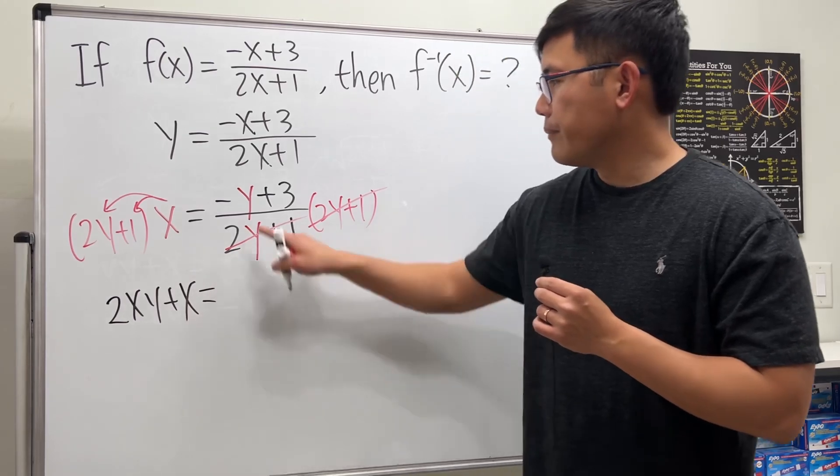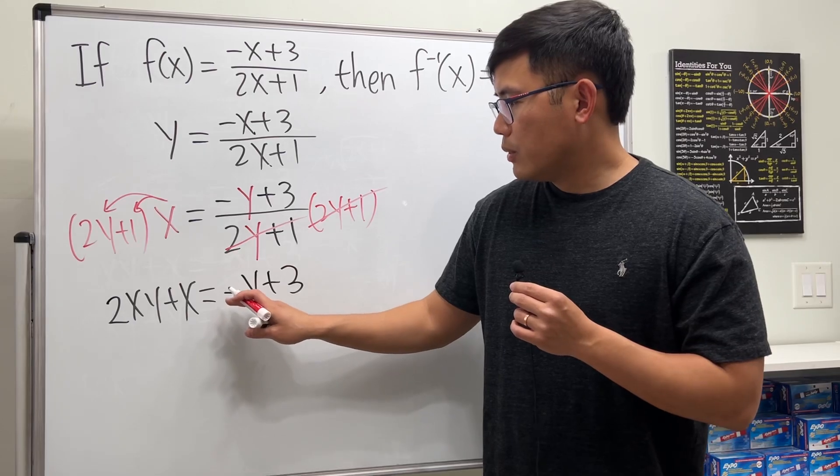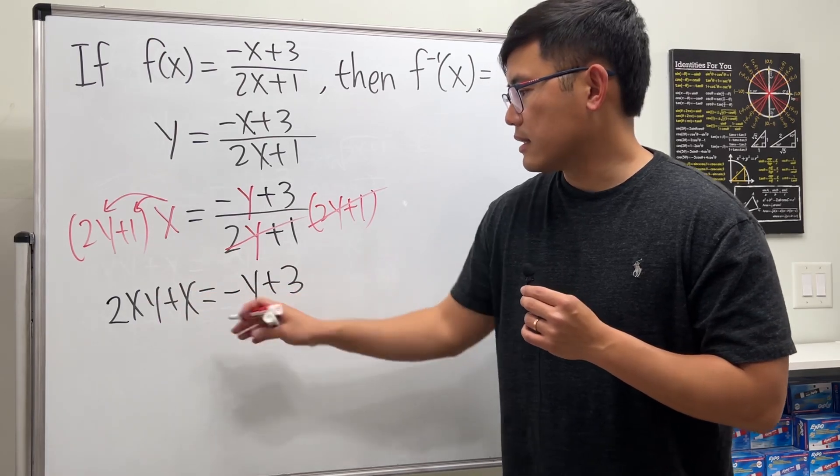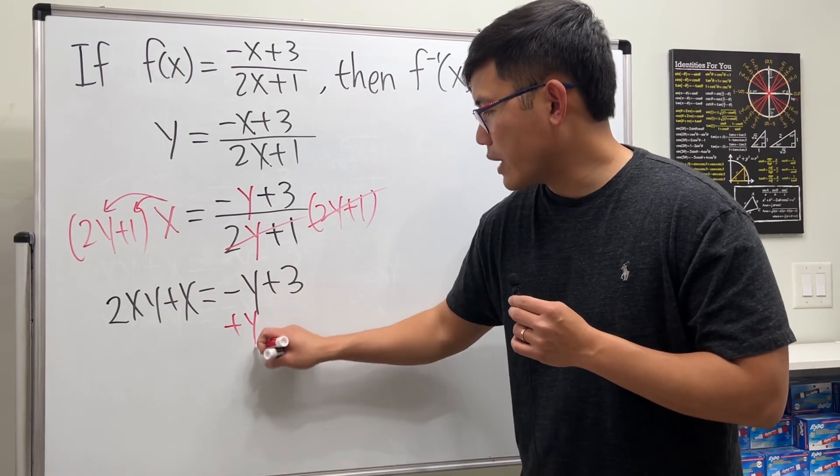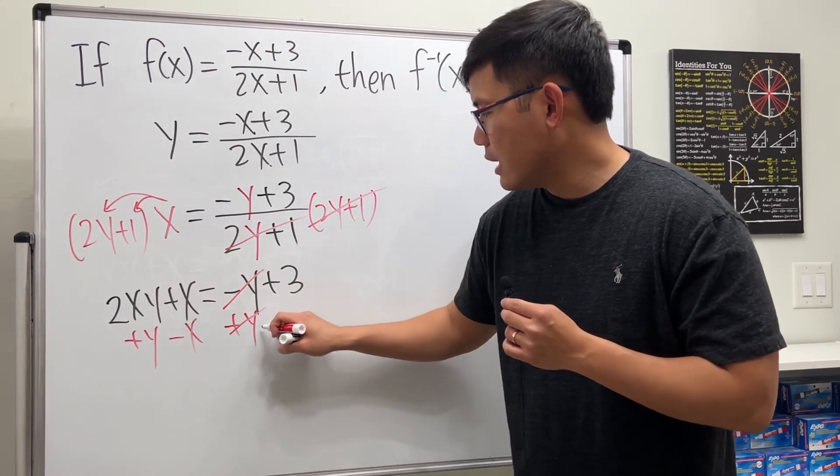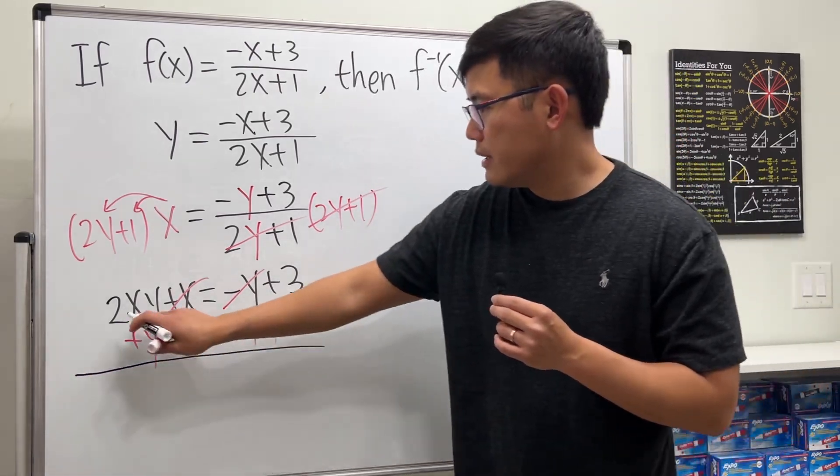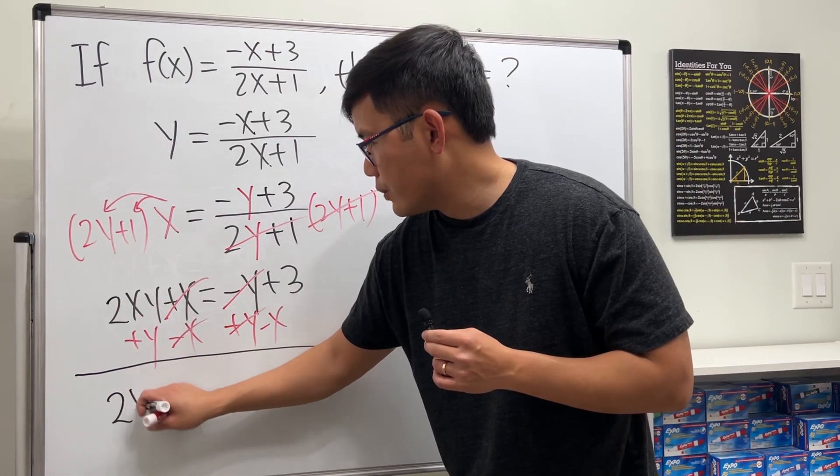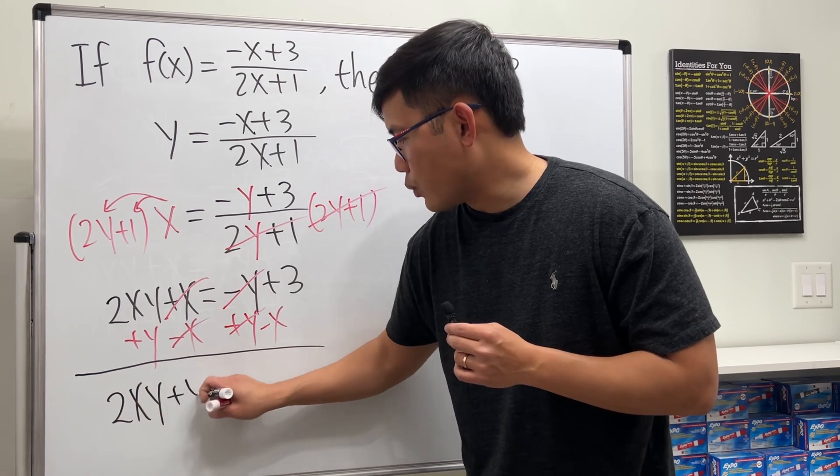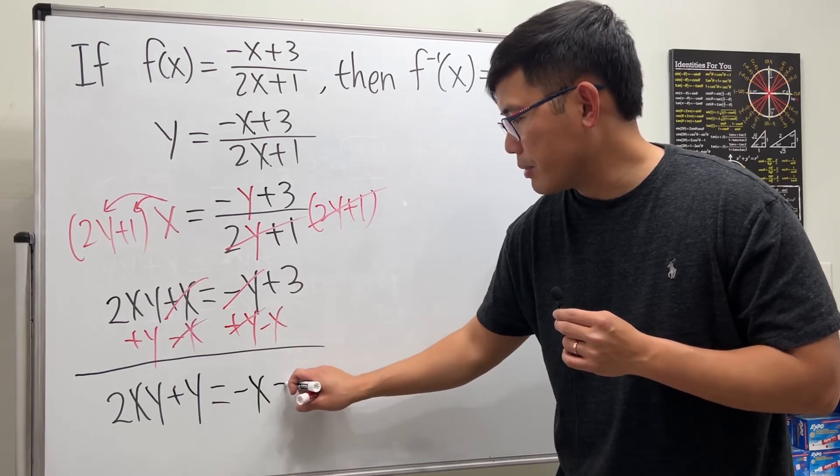Now I'm just going to move all the y terms on one side and the x on the other. So I will plus y here, plus y here so they cancel, and then minus x here, minus x here so they cancel. And we have 2xy plus y equals negative x plus 3.